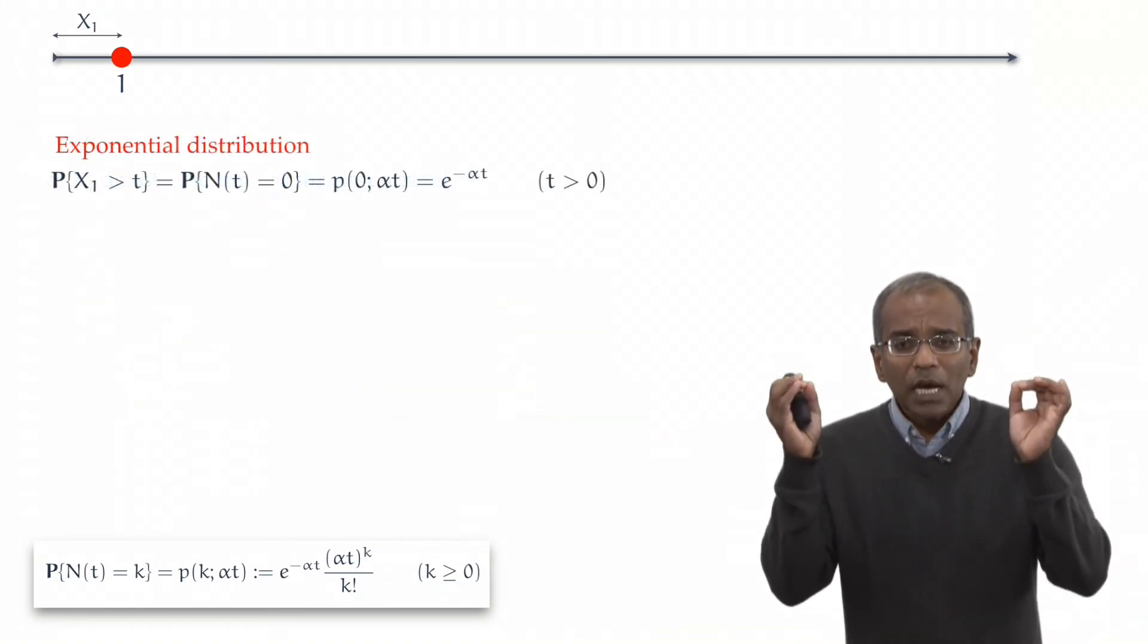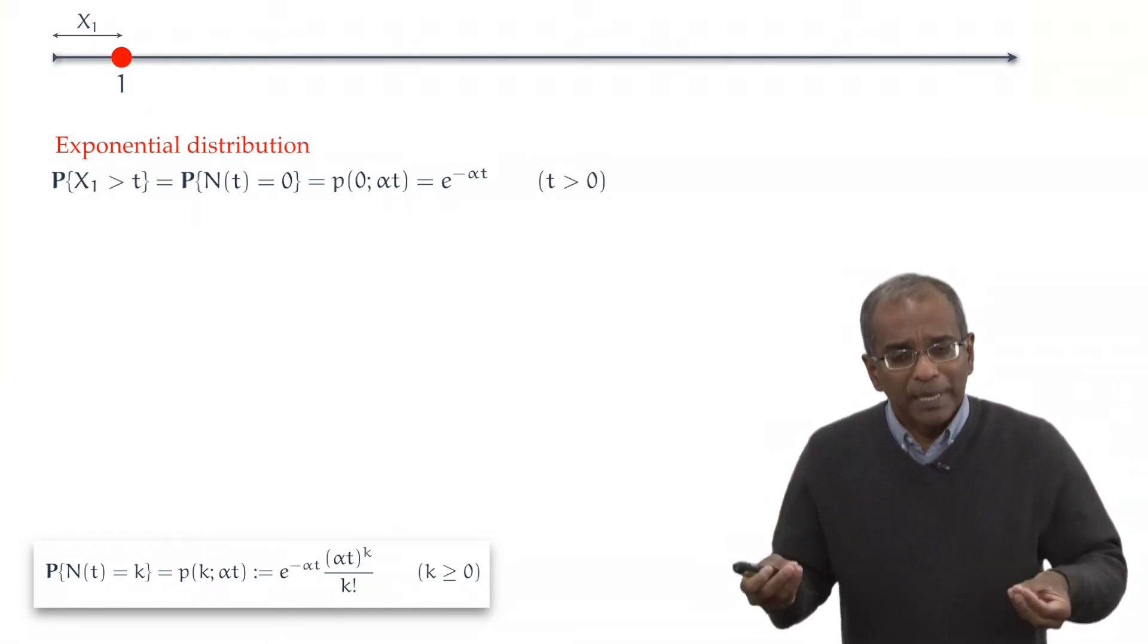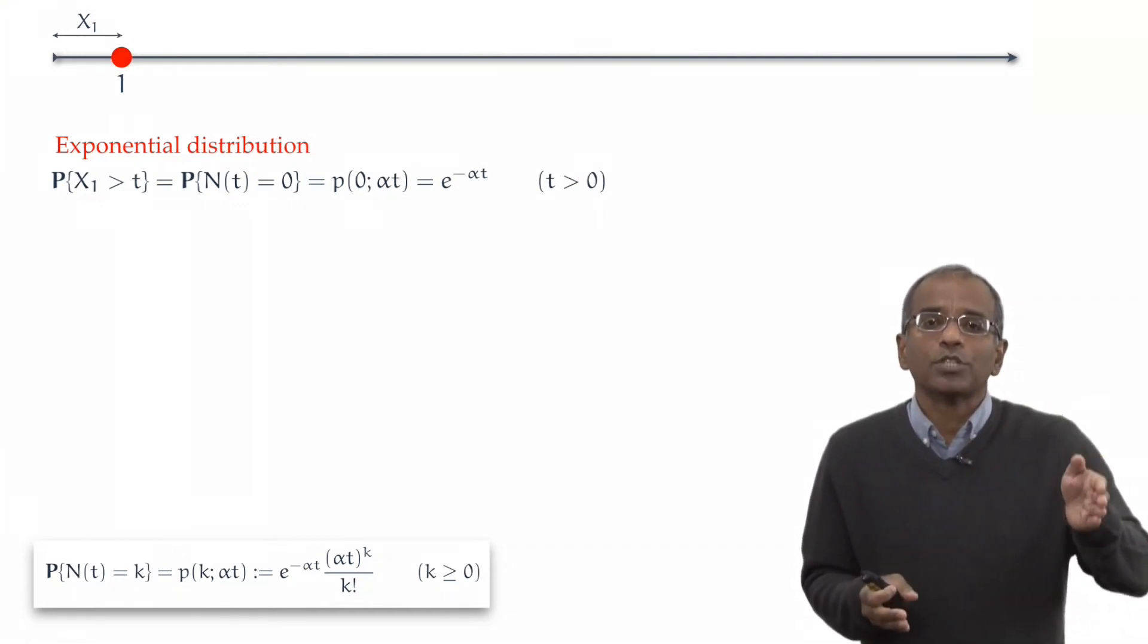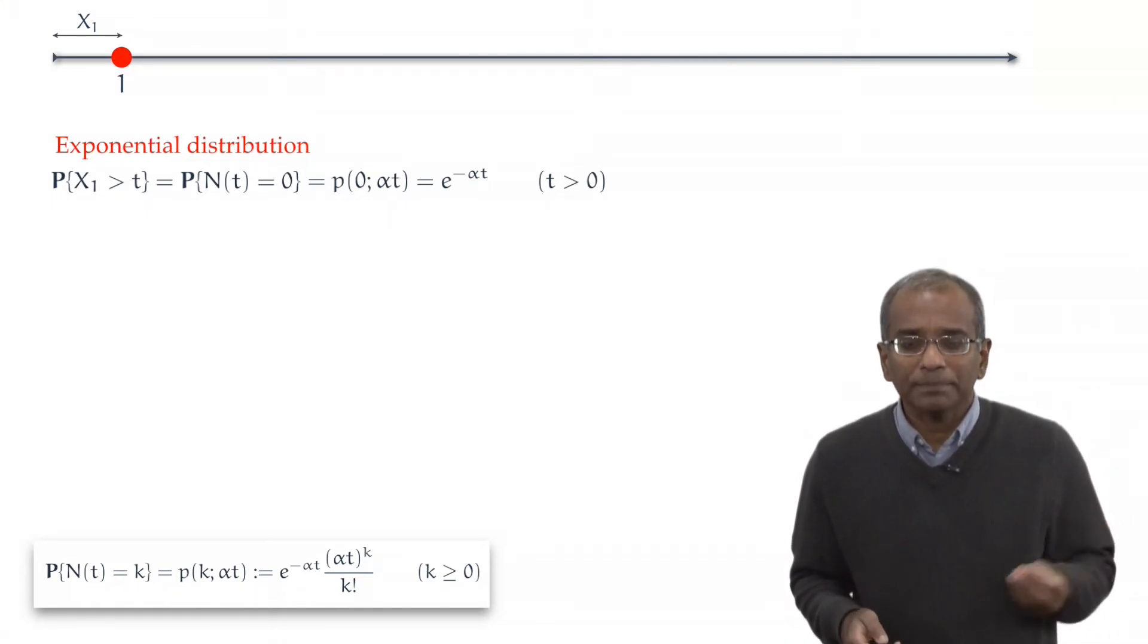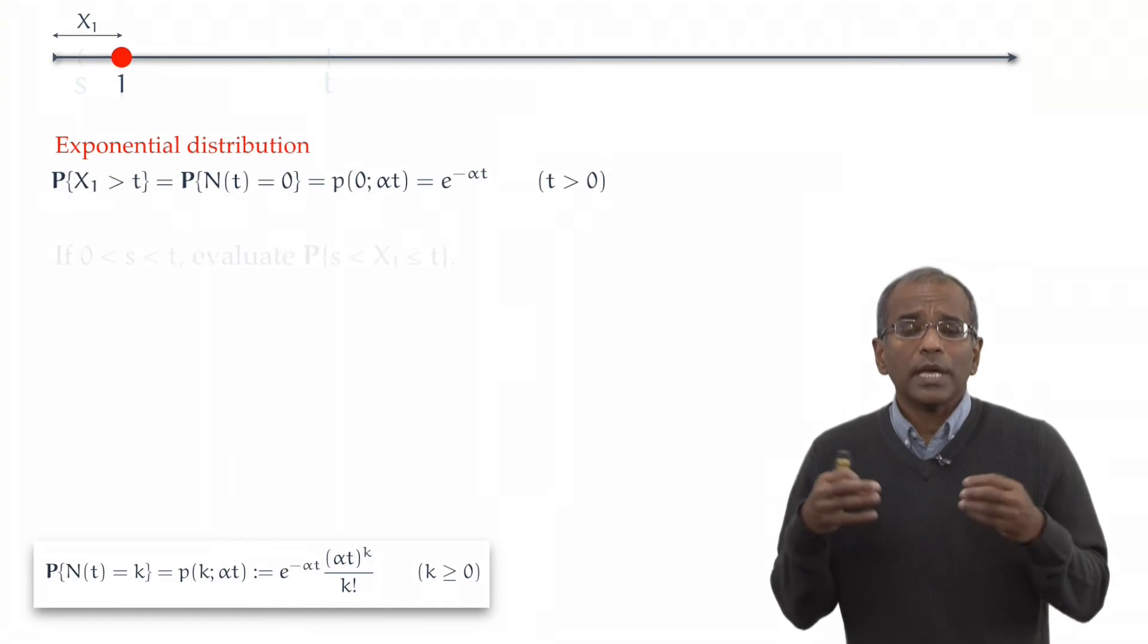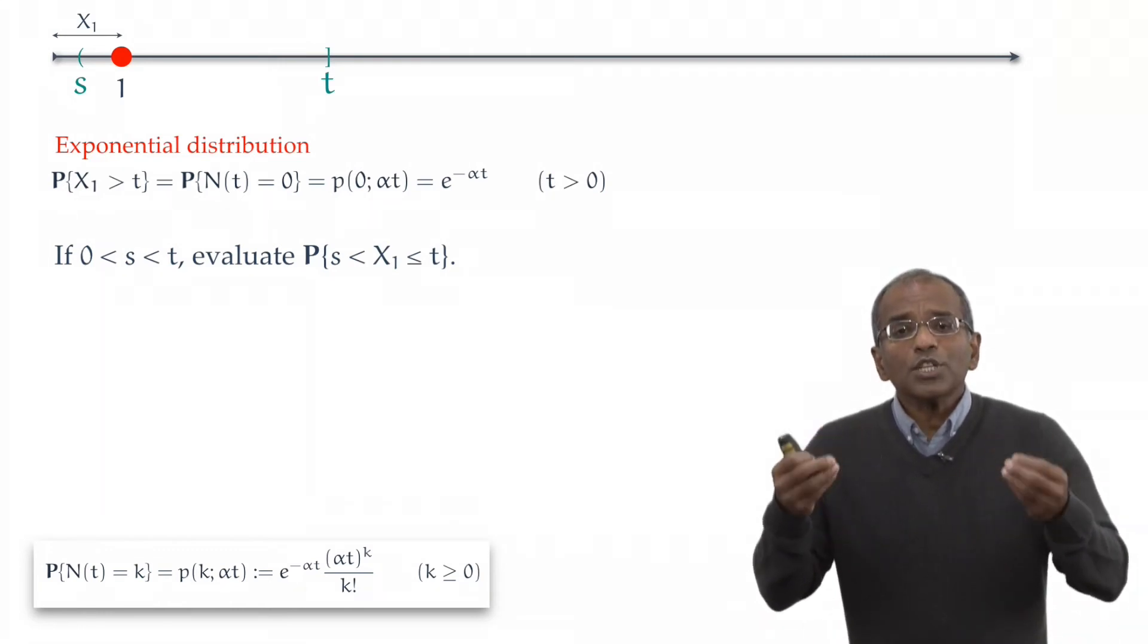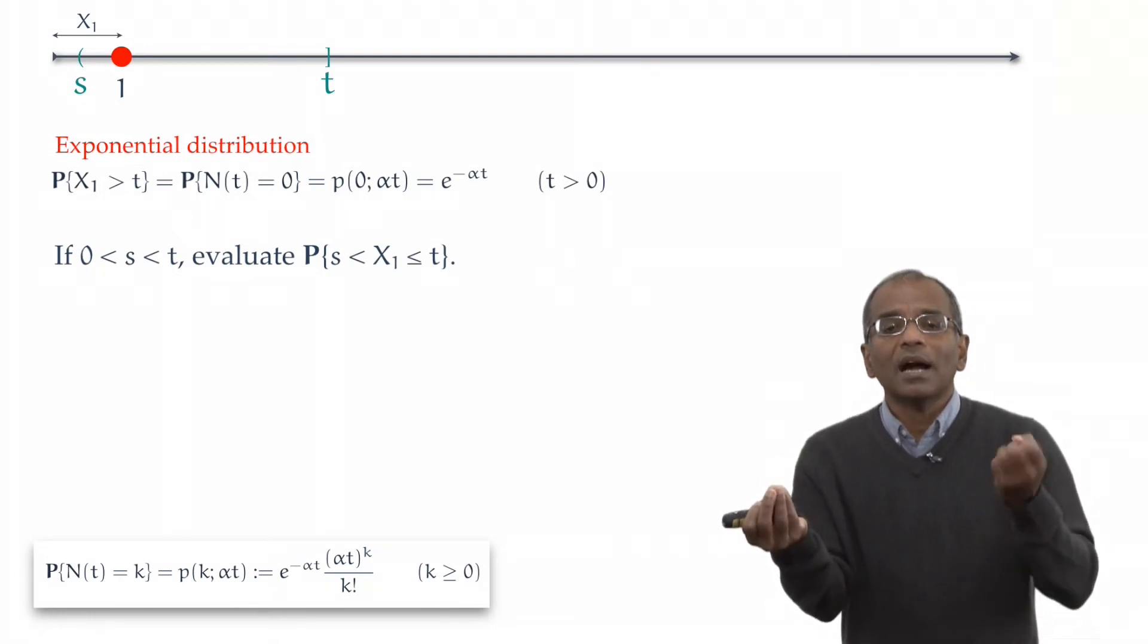We know that the time of first arrival is governed by an exponential distribution by which we mean that the probability that the time of first arrival exceeds any given positive time t is exactly e to the power minus alpha t. Now, take a hand at evaluating a slightly more complex probability. Suppose s and t are positive real values, and s is less than t. What are the chances that the first arrival occurs between s and t?